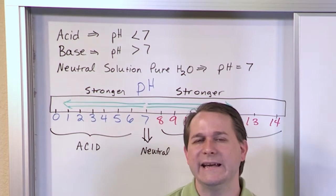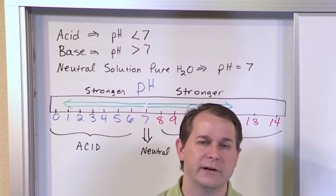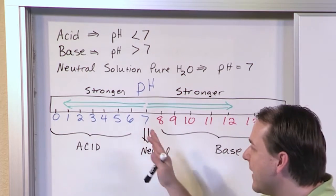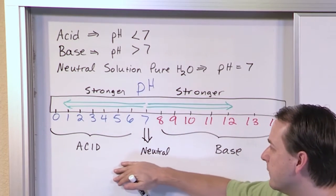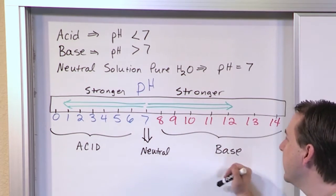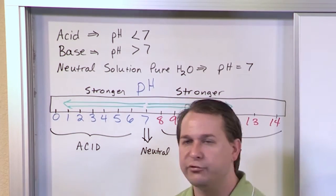Now, I've already hinted before in the last section, but I'll restate it again now. We have acids on this side of the pH scale, and we have bases on this side of the pH scale. And in the middle, we have neutral.